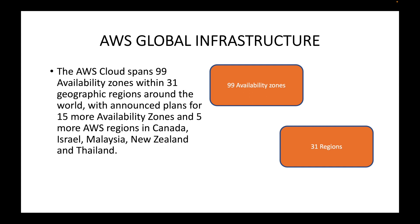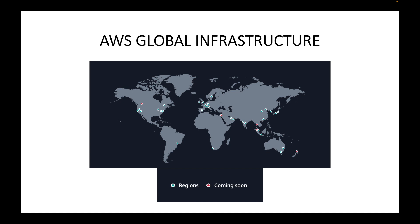AWS has also planned for 15 more availability zones and five new regions, which will be in Canada, Israel, Malaysia, New Zealand, and Thailand. In the next session, when we talk about the AWS console walkthrough, I will show you the regions that are available. All these regions are scattered all around the world. The blue dots that you see are your existing regions, and the red ones are your upcoming or planned regions.